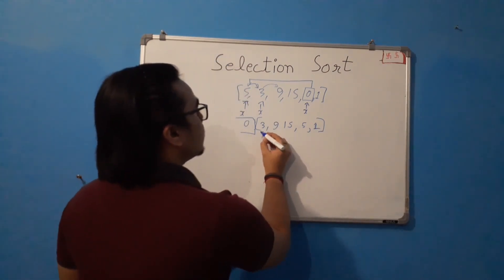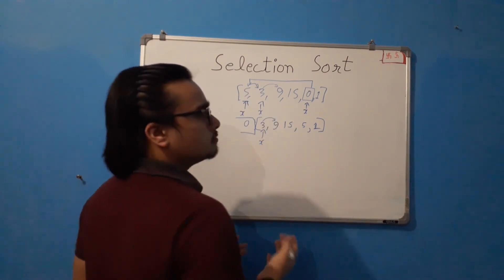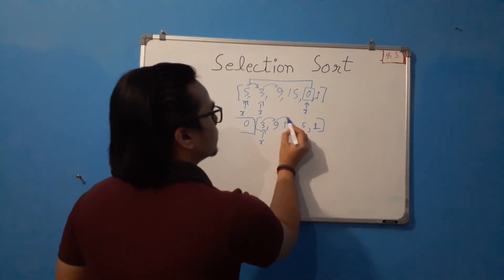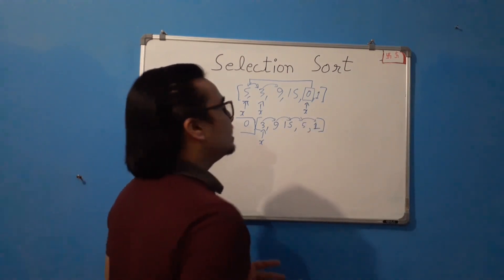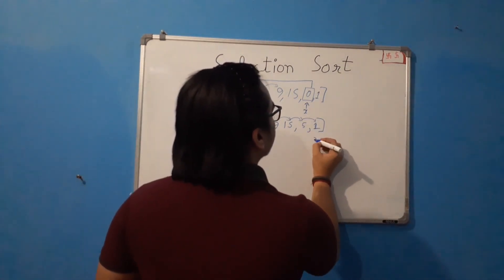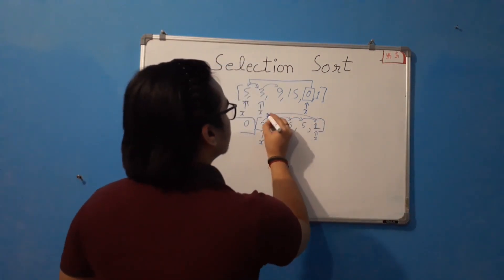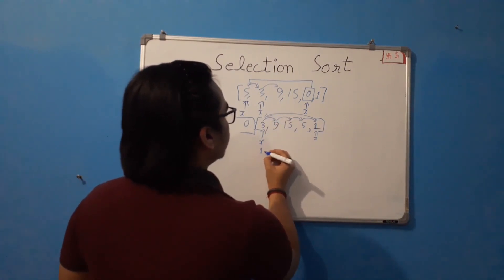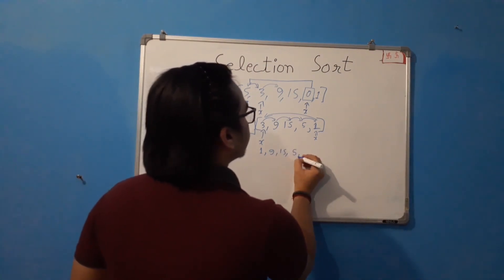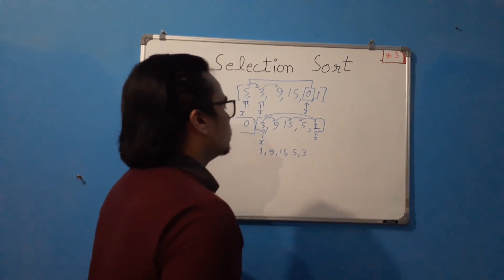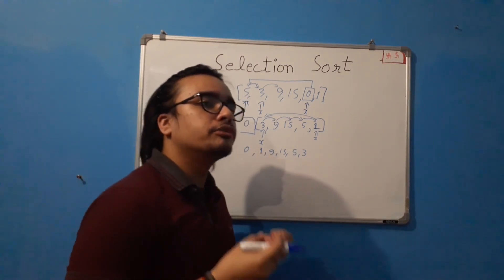Now we'll select 3 as x. We'll compare it with 9 — not smaller. Then with 15, then with 5, and then with 1. So 1 is smaller than 3, so x becomes 1. The value will be swapped and now this list will become: 0, 1, 9, 15, 5, and 3. So this is how selection sort works.